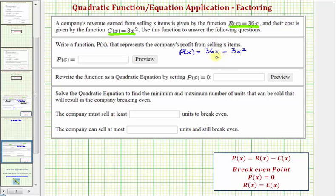For our final profit function though, let's write the terms in descending order. So we'll write P(x) = -3x² + 36x.